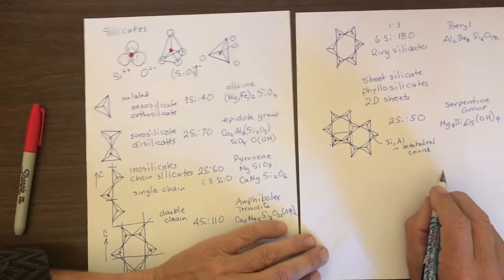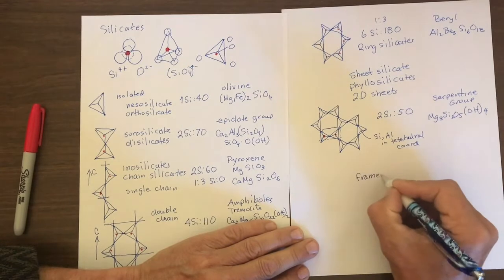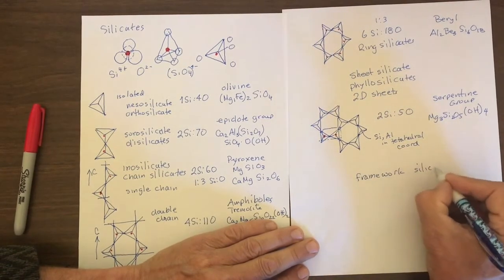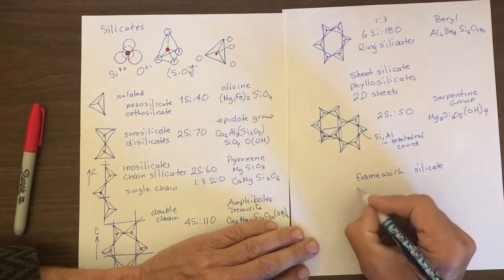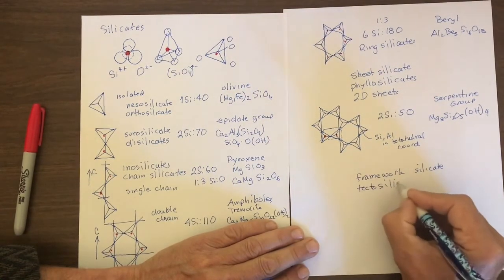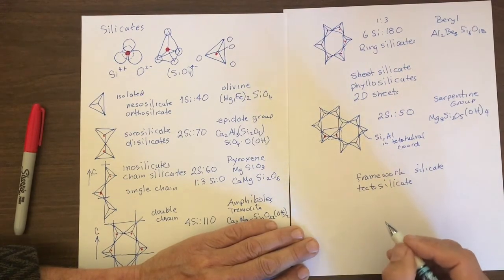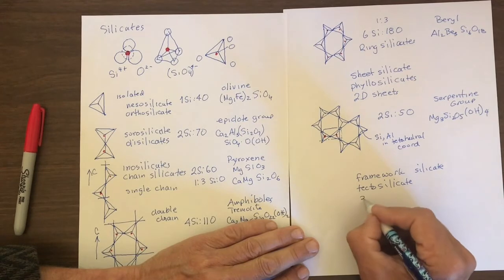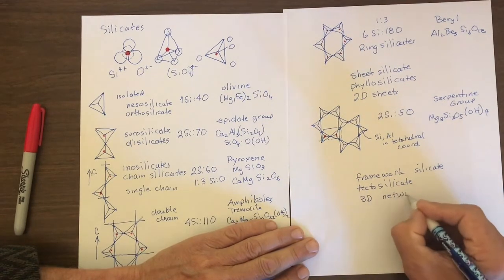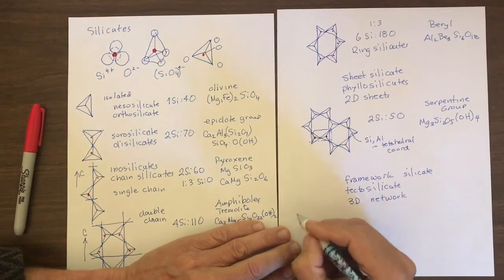The last type of silicates we're going to look at are called framework silicates. Those are also called tectosilicates. And in this case, the silica tetrahedra are linked together in a 3D network, which is difficult to illustrate on this 2D sheet of paper, but we'll give it a try.